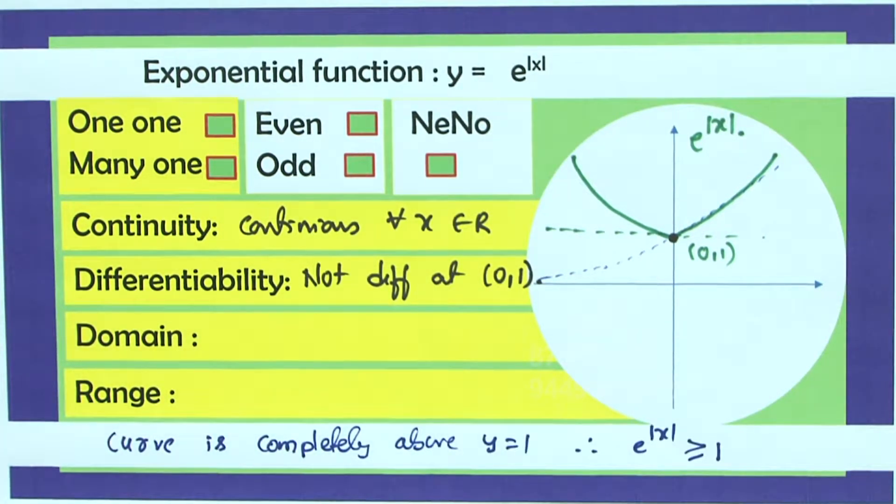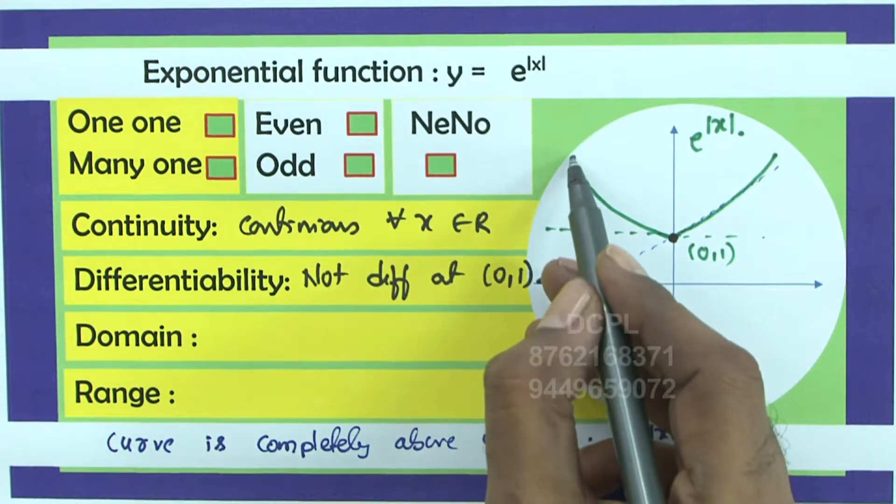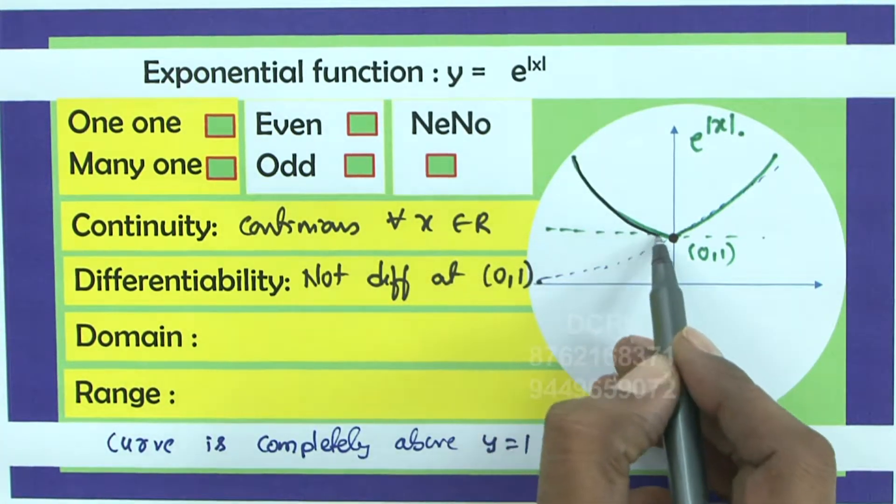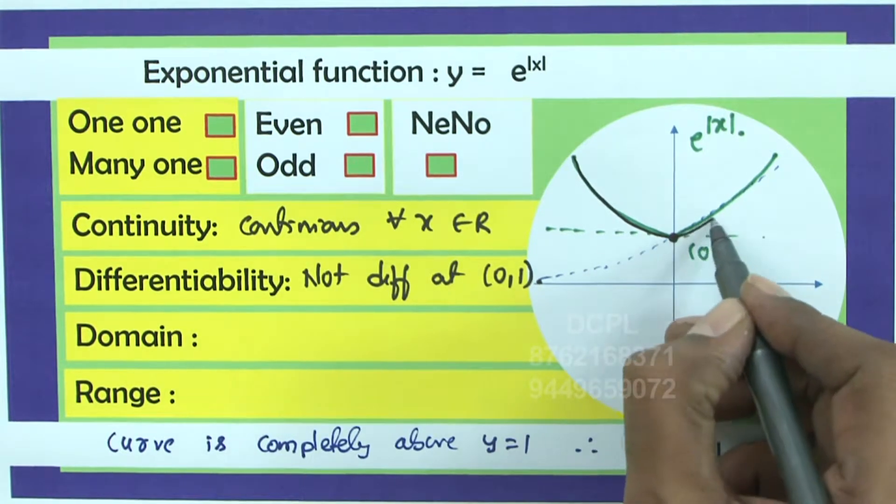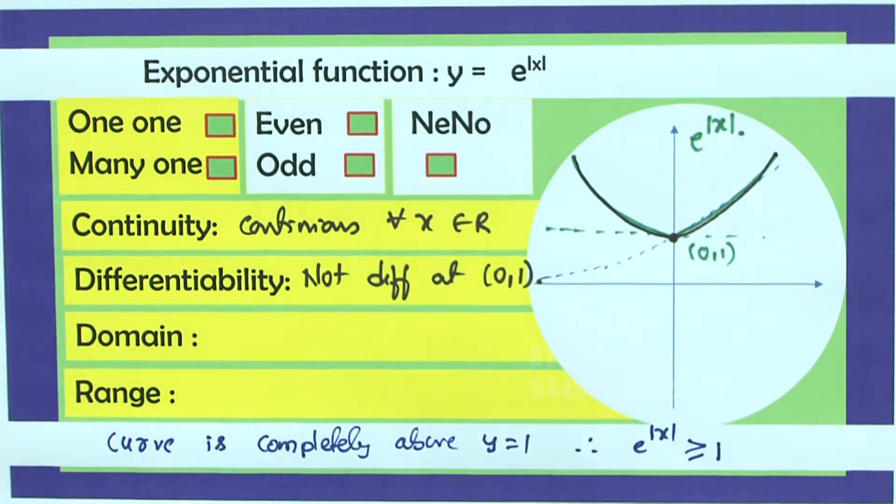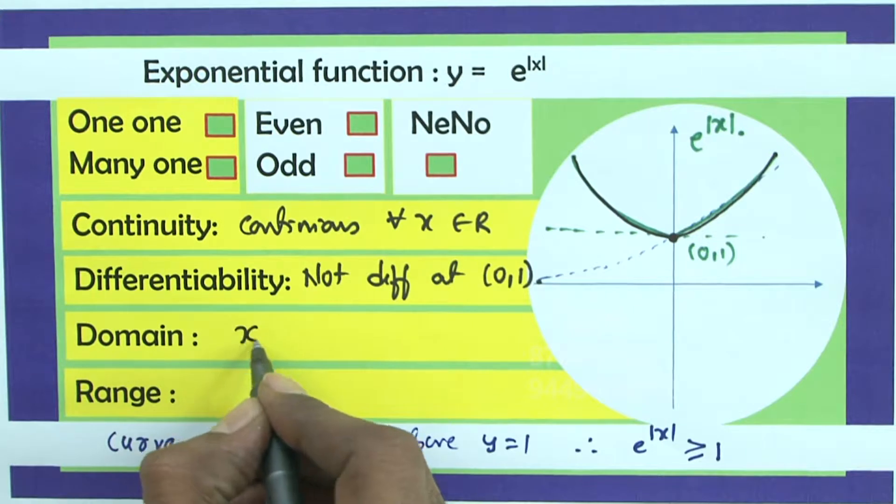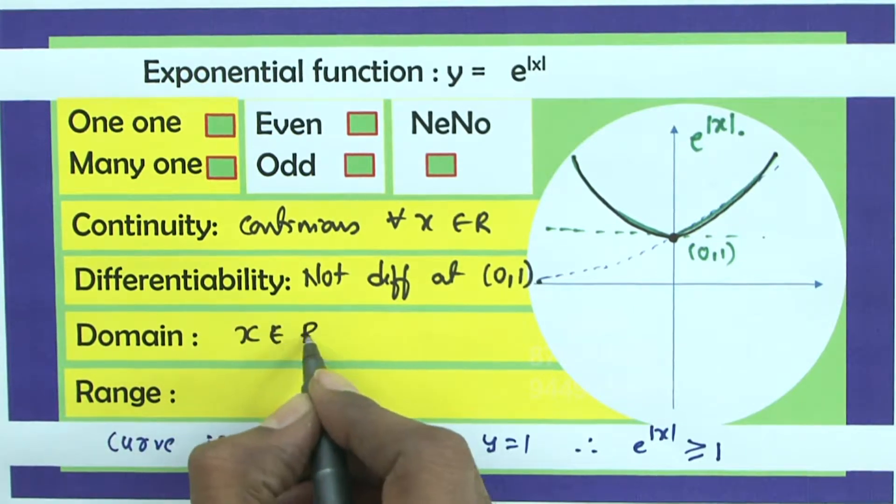Otherwise it is differentiable. Wherever continuous, it is differentiable except that x is equal to 0 or y is equal to 1. What about domain? Anybody can say the graph exists from minus infinity to plus infinity without a break.